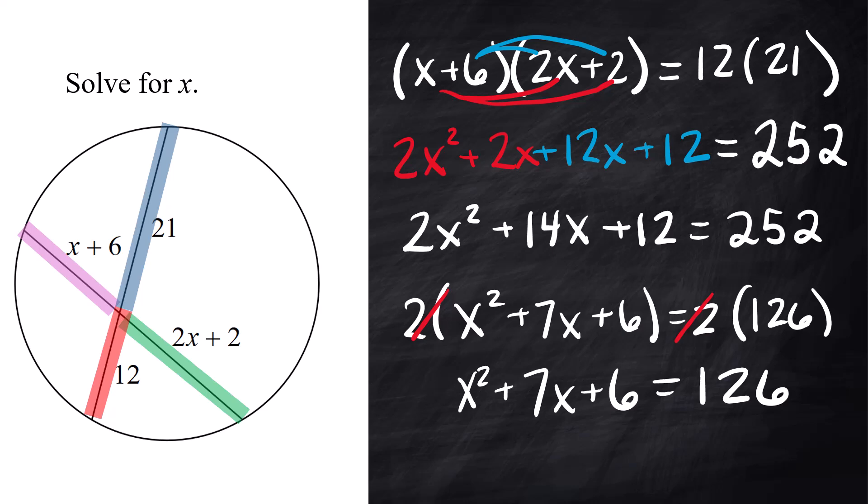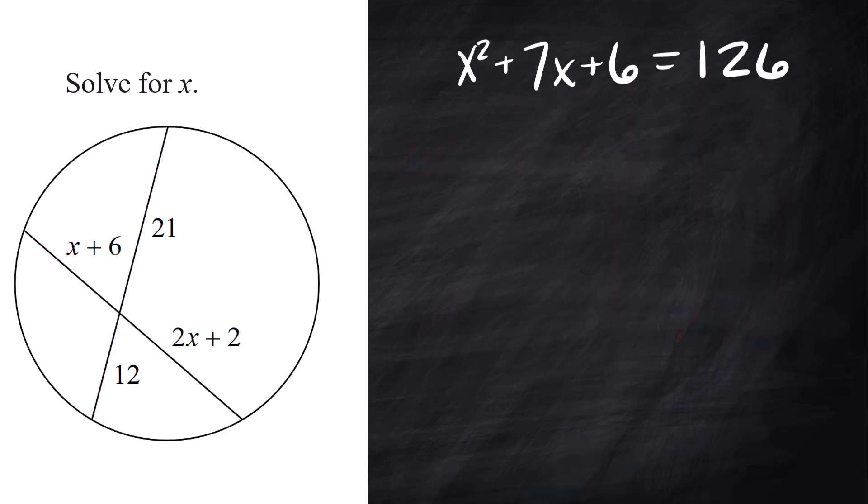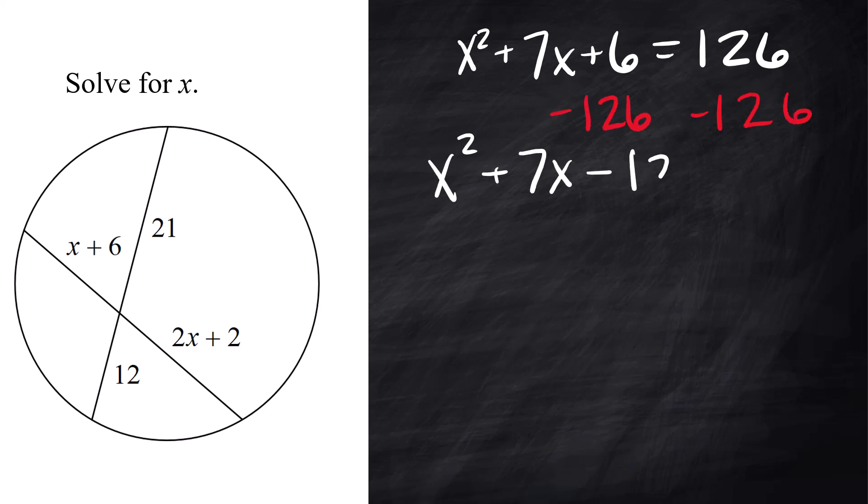Okay, to solve for x, we need to make this side where the 126 is, that needs to be 0. So let's subtract 126 from both sides. x squared plus 7x minus 120 equals 0. Positive 6 minus 126 is a negative 120. Now we're going to factor.